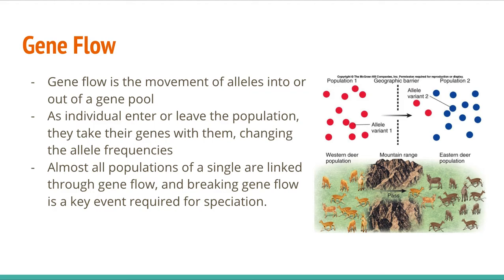It also happens in sympatric speciation, where two populations just start to have different patterns, and over time those different patterns, feeding habits, or night cycles means that they diverge from one another. In both of those cases, gene flow has been broken, because our definition of species is organisms that can't interbreed. The only way you get enough genetic distinction between two populations to prevent them from breeding is to not let them breed for a long time. So you have to break gene flow for speciation.